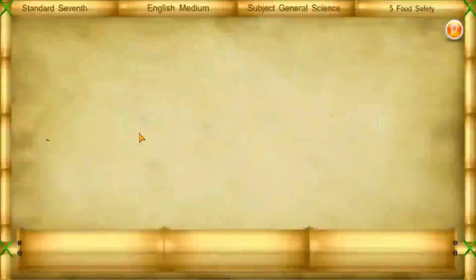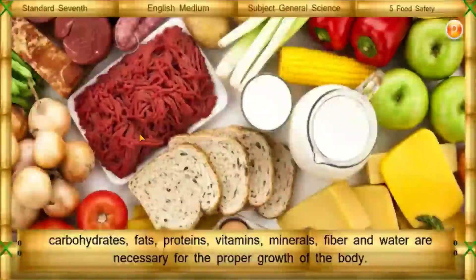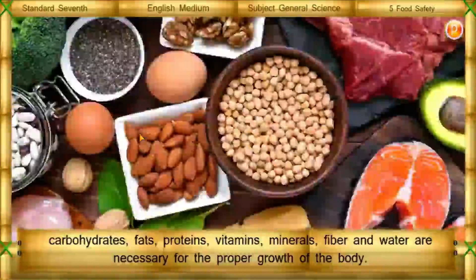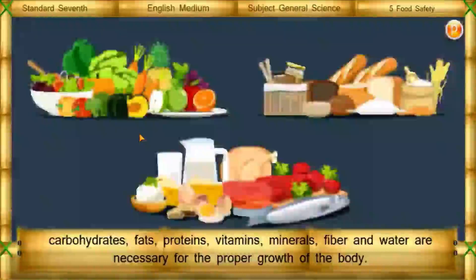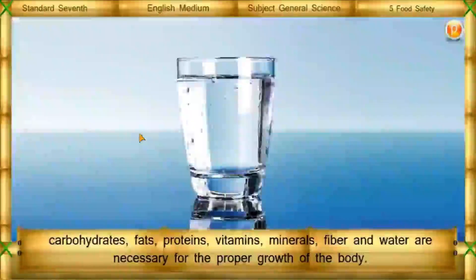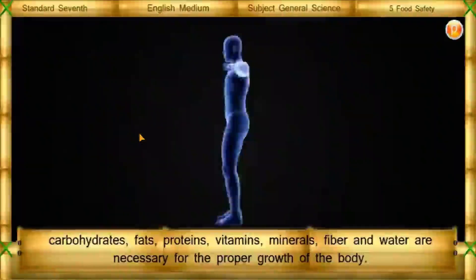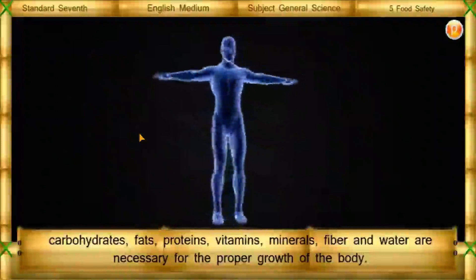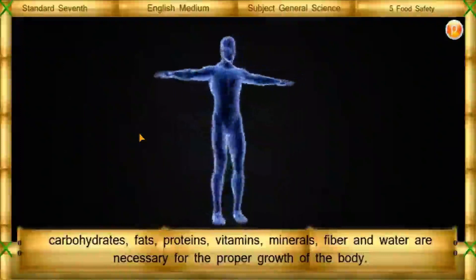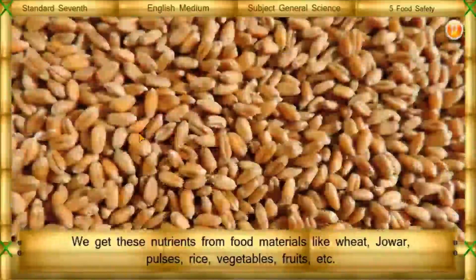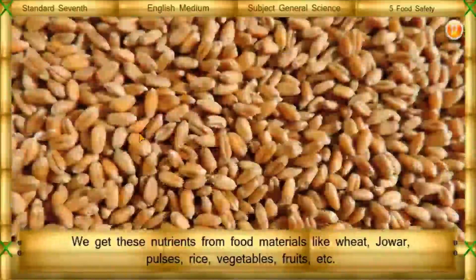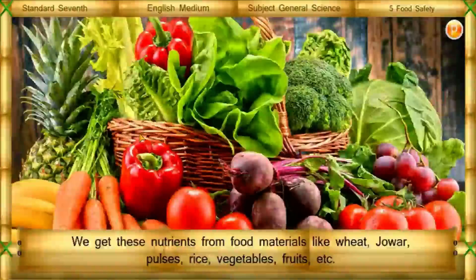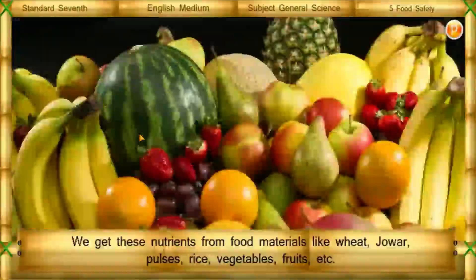All constituents of food — carbohydrates, fats, proteins, vitamins, minerals, fiber, and water — are necessary for the proper growth of the body. We get these nutrients from food materials like wheat, jowar, pulses, rice, vegetables, fruits, etc.